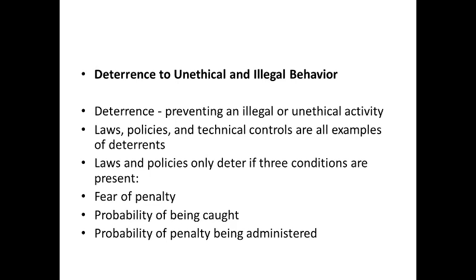The next topic is deterrence to unethical and illegal behavior. Deterrence is a process of preventing an illegal or unethical activity. Laws, policies, and technical controls are examples of deterrence. Laws and policies only deter if three conditions are present: fear of penalty, probability of being caught, and probability of the penalty being administered — similar to the conditions during a lockdown.